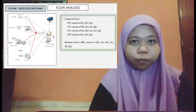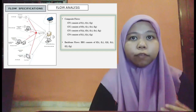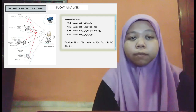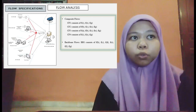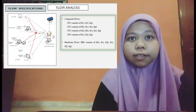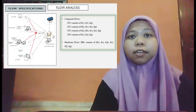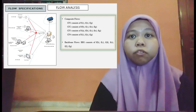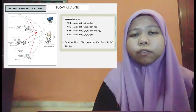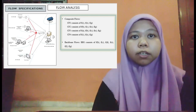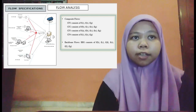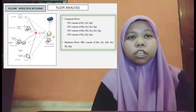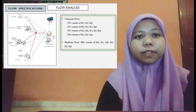CF4 consists of flows C, E, and G. You can refer back to the flow distribution table for more details on these composite flows. For the backbone flow, there is only one — BB1 — which consists of flows B, C, D, E, F, and G. You can better understand this by referring to the flow specification plan.